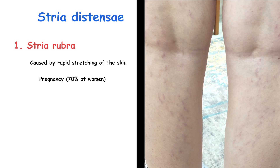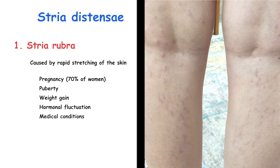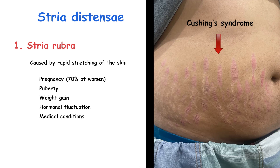Another common cause of stria rubra is puberty, when rapid growth can cause the skin to stretch rapidly. Other reasons include weight gain, hormonal fluctuation, some medical conditions like Cushing's syndrome, and long-term use of corticosteroids, because these conditions affect collagen and skin elasticity.